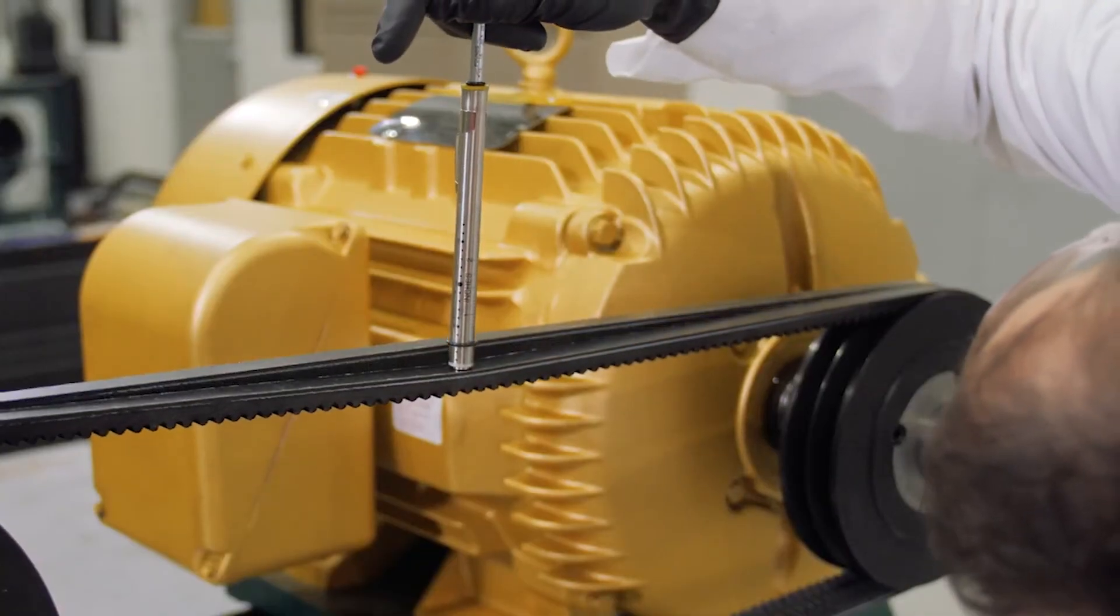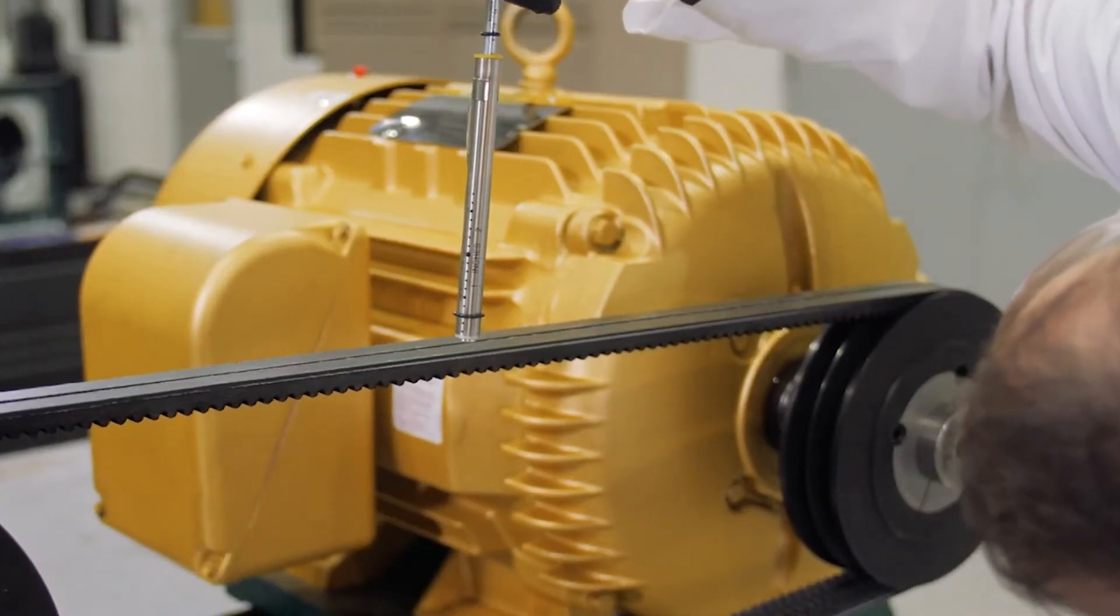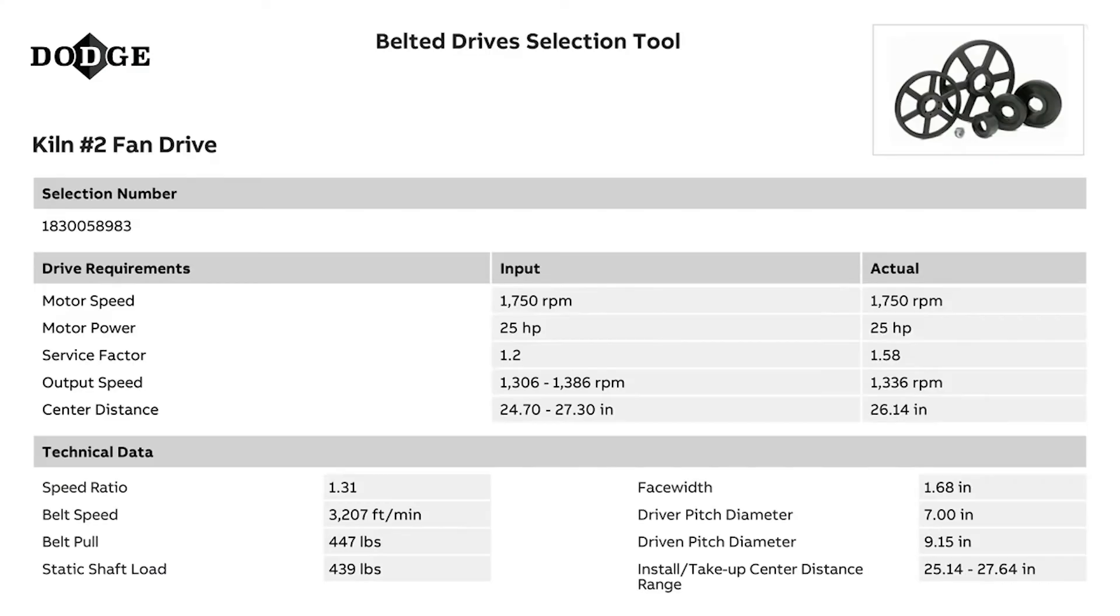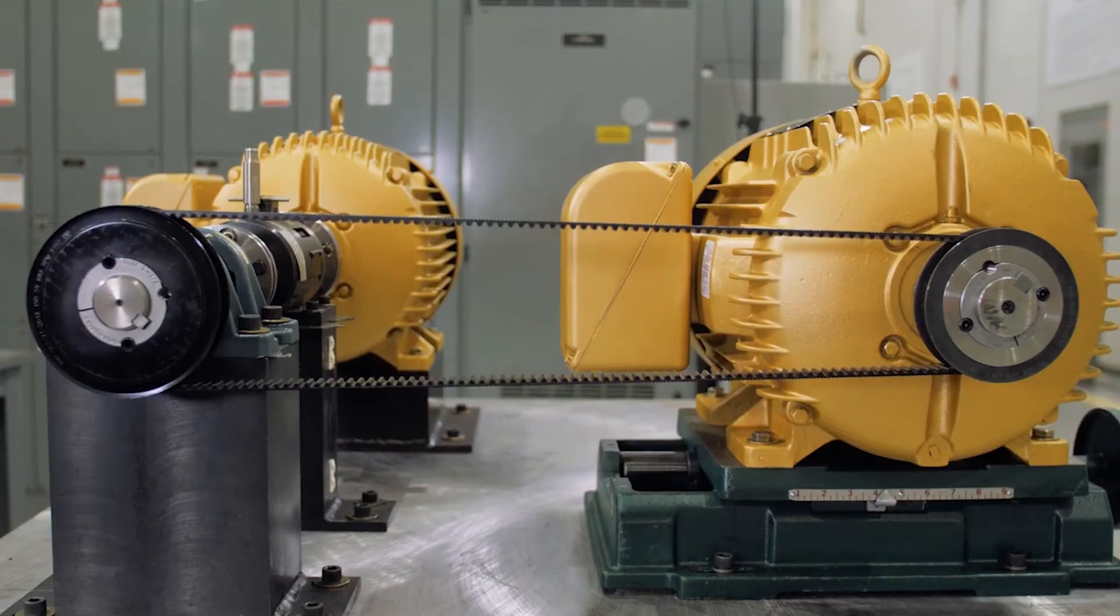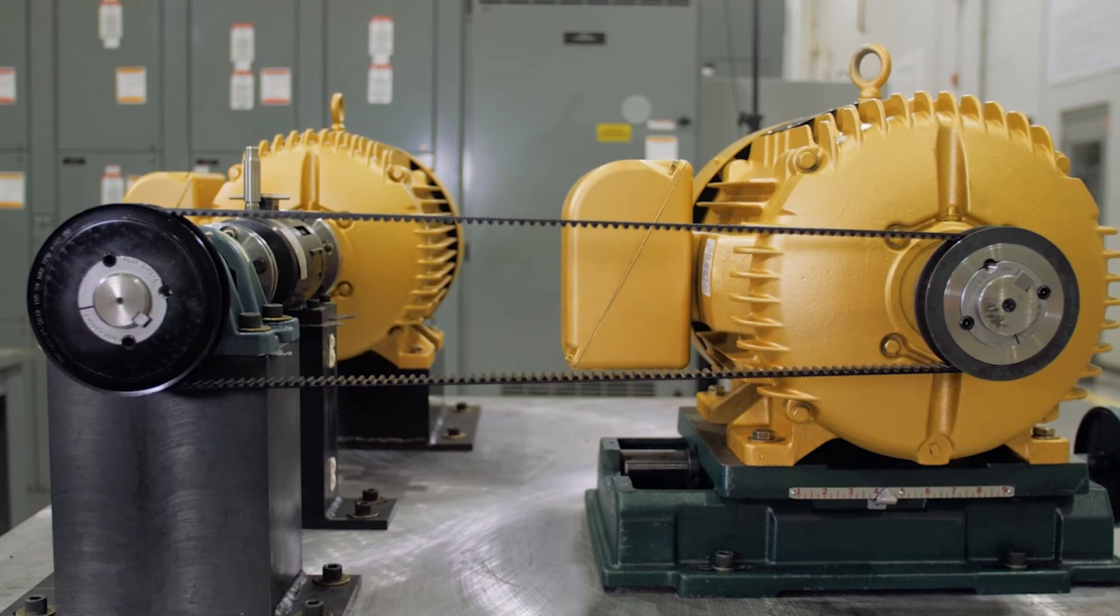Compare this to the recommended range in the instruction manual or the belt deflection distance shown in Dodge Passport. If the measured force is outside of the range, adjust center distance accordingly until the measured force falls within the allowable range.